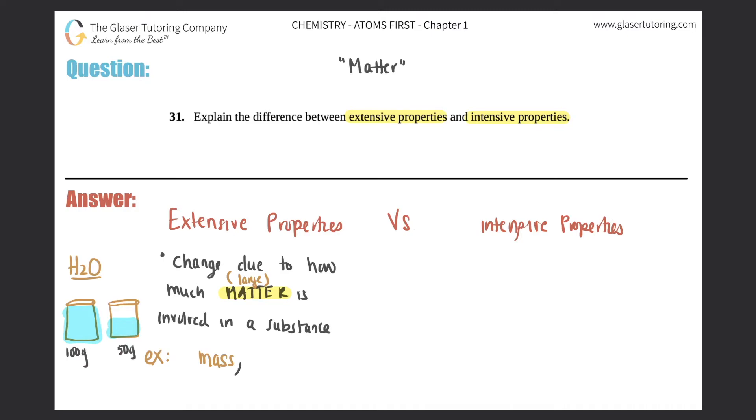And since the mass can change, volumes can also change. So that's another example of an extensive property. You could have small volumes. You could have large volumes. Let's think mass, volume. What else is extensive? We'll come back to that one in two seconds if I think of any other ones. Usually mass and volume is the two big ones.